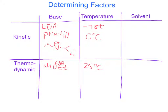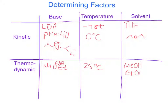Finally, the solvent is equally as important when controlling whether we get the kinetic enolate or thermodynamic enolate. For the kinetic product, we need polar aprotic solvents, because it dissolves the polar reactants and stabilizes the intermediate. What we generally use for this are THF and diethyl ether. The polar aprotic solvent helps prevent the enolate from reprotonating, which again helps us to avoid the equilibrium that prefers the more stable product. For the thermodynamic product, we want that equilibrium, so what we use is polar protic solvents. Generally what we use here are methanol, ethanol, or simply just water.